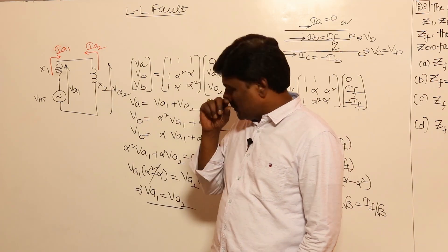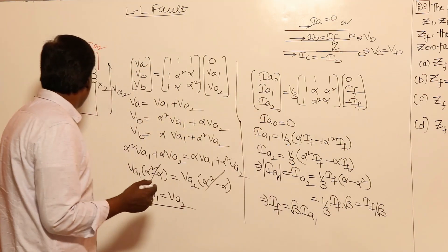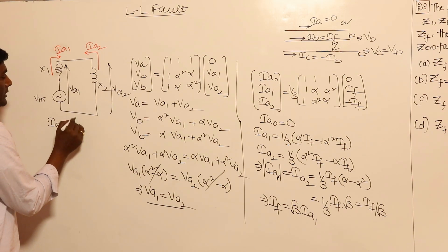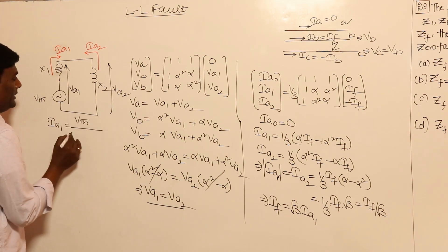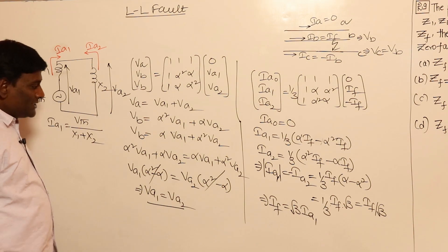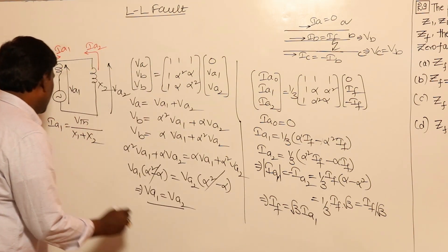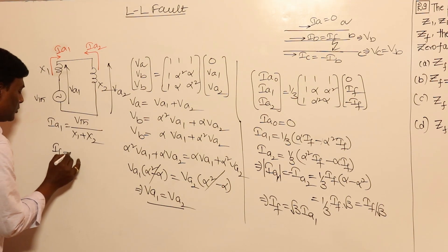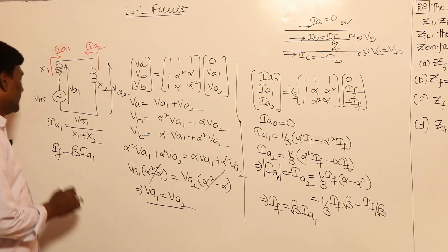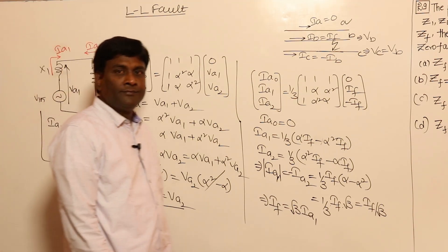Now, IA1 is going to be VTH divided by (X1 + X2). What is the fault current? Fault current equals root3 times IA1. So fault current IF = root3 × VTH / (X1 + X2). Now we can directly solve problems.